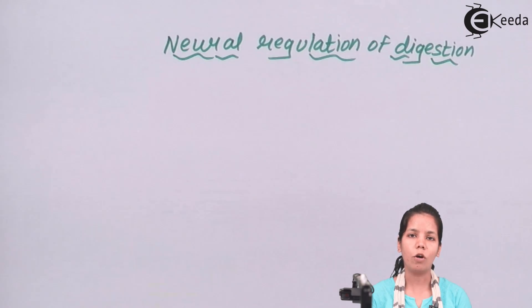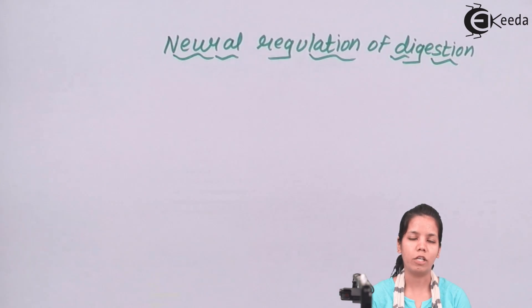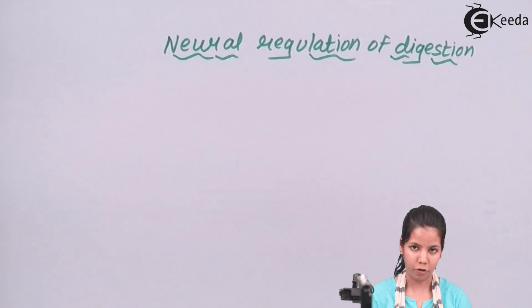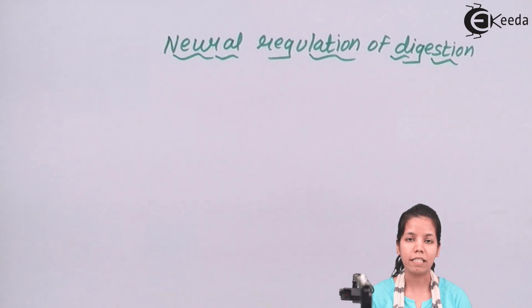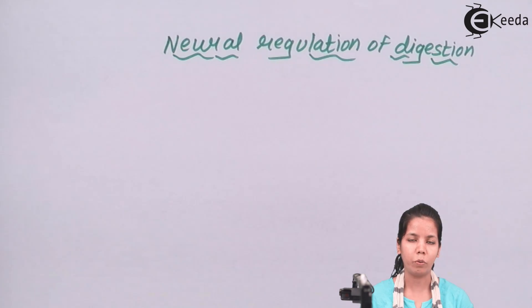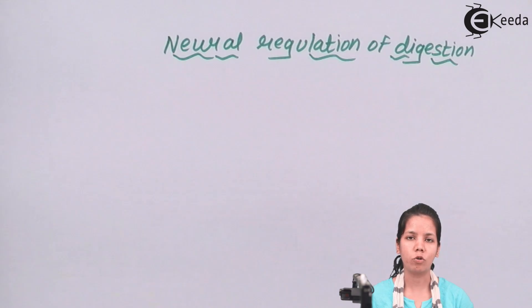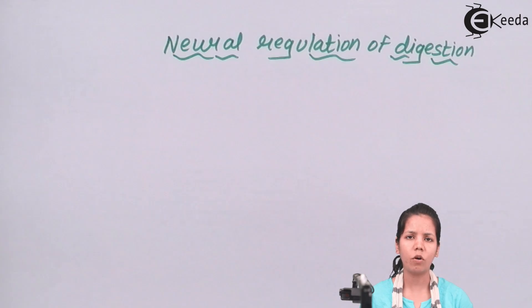Now, how does neural regulation help in digestion? Reflexes in your body — whether short reflexes or long reflexes — are sudden actions such as chewing or biting. All of them are controlled by your CNS, PNS, or sometimes your ANS.